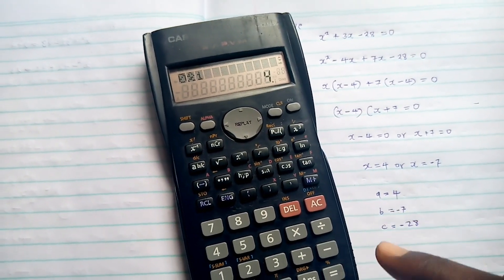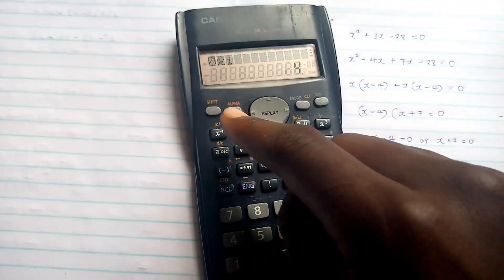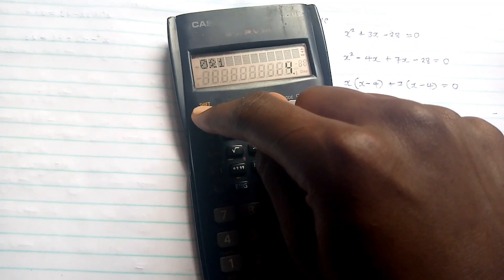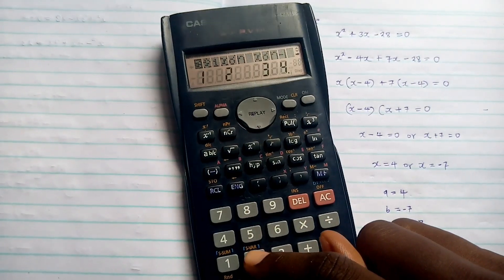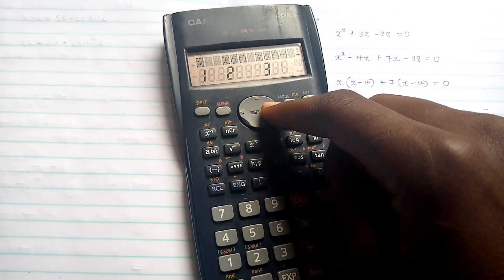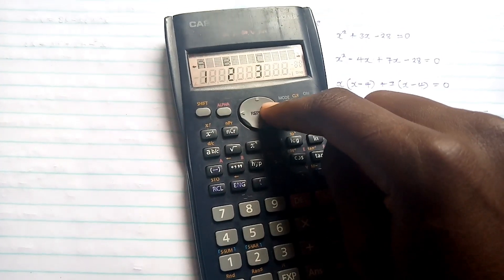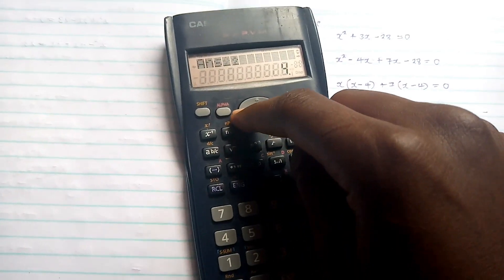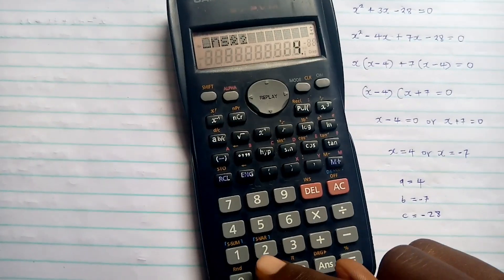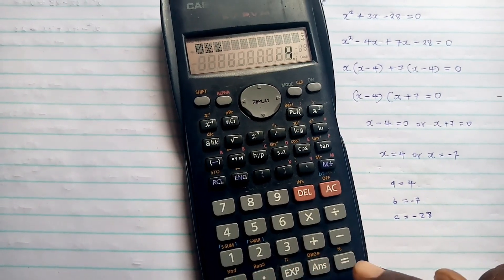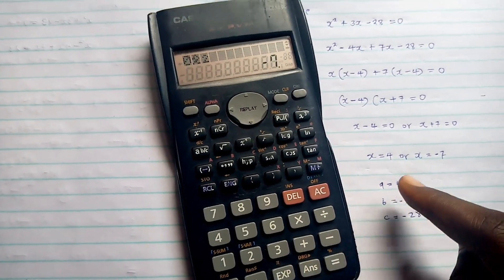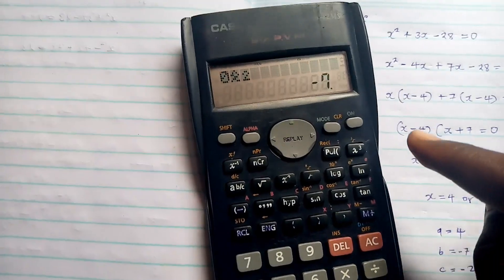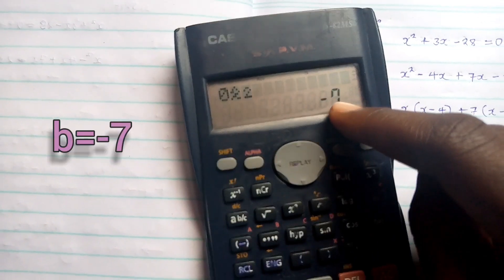Now, in order to get B, we'll follow the same procedure by pressing Shift, 2, right key, again 2, left key, then 0, then answer. Our answer is 7.